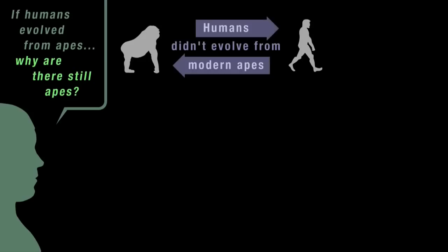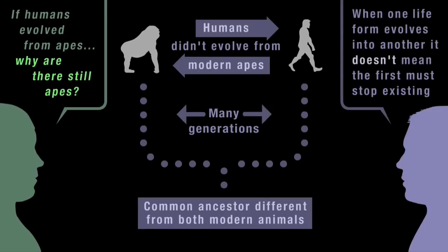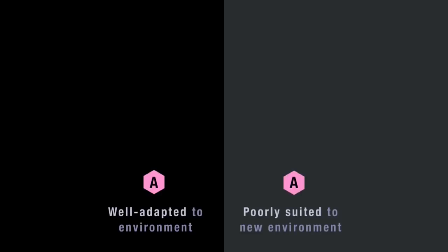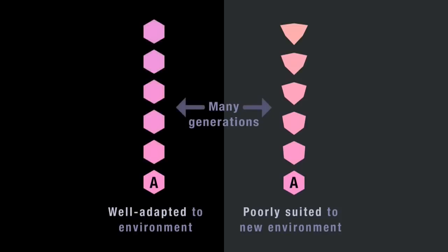Firstly, humans didn't evolve from the apes we see today — humans and modern apes share a common ape-like ancestor different from both modern animals. But secondly, when one lifeform evolves into another, that doesn't mean the first lifeform has to stop existing. Take a lifeform so well adapted to its environment that it changes very little from one generation to the next. But then part of the population spreads to a new environment where it's poorly suited — different survival pressures lead generations of this separate population to change dramatically, while the first population remains barely noticeable in change. After many generations, Population 1 still exists in more or less its original form alongside the now very different Population 2.